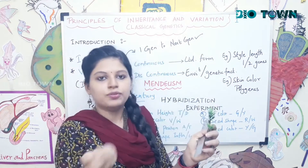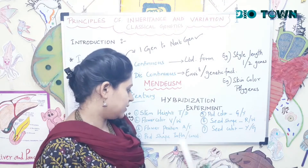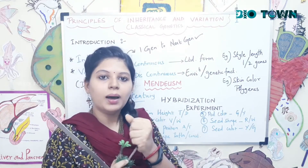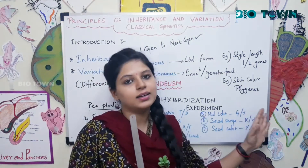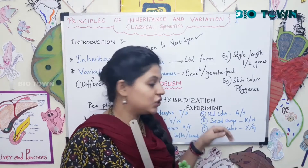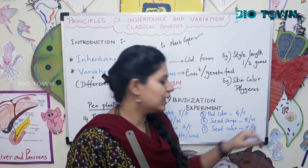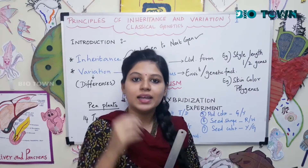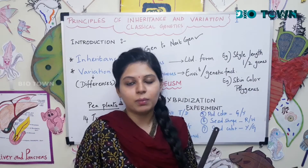The fourth character is pod shape. The pod is the outer layer covering the seed. Pods can be inflated — meaning bulgy and air-filled — or constricted, meaning thin and compressed. The fifth is pod color: green versus yellow. The sixth is seed color: green versus yellow seeds. The seventh is seed shape: round seeds versus wrinkled seeds, which have less starch content.